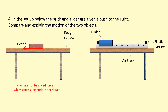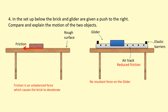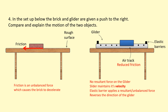The glider sits on an air track, which fires air to create a very smooth surface. When given a push, the glider keeps going until it hits an elastic barrier, which bounces it back. The air track reduces friction to near zero, so with no friction and no air resistance, there is no resultant force on the glider — it maintains its velocity until the elastic barrier applies a force and changes its direction.